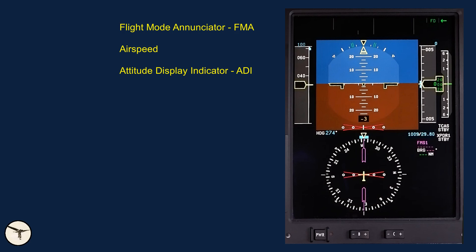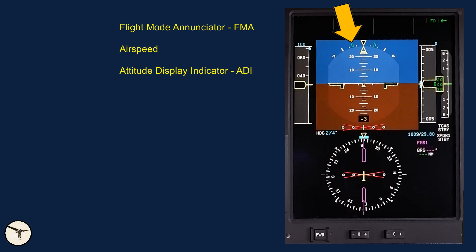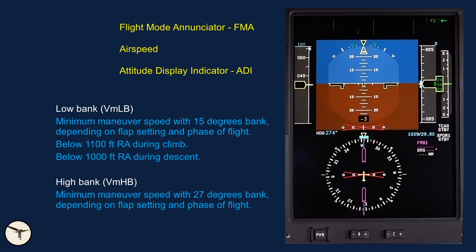The vertical scale is the pitch angle in degrees. When parked on the ground, the aircraft has an attitude of one degree nose down. There are markers for 10, 20, 30 and 45 degrees bank. The two green lines indicate maximum allowed bank angle as determined by the flight director. At low speeds, and when flying below 1100 feet after takeoff, maximum bank angle is 15 degrees, as shown here. This is called low bank.